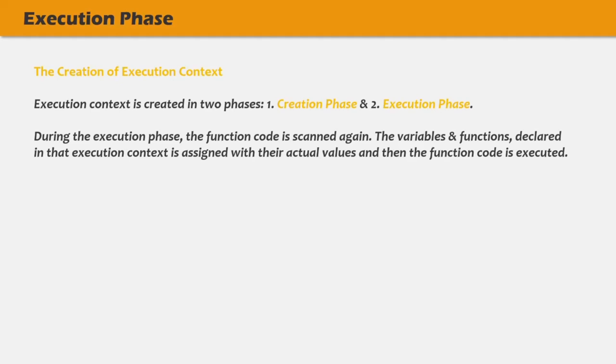After the creation phase is complete, the execution phase of the execution context starts. In the execution phase, the JavaScript engine will scan the function code again, and this time it will set the variables and functions declared in that execution context with their actual values. And then in this phase, the function code is executed.